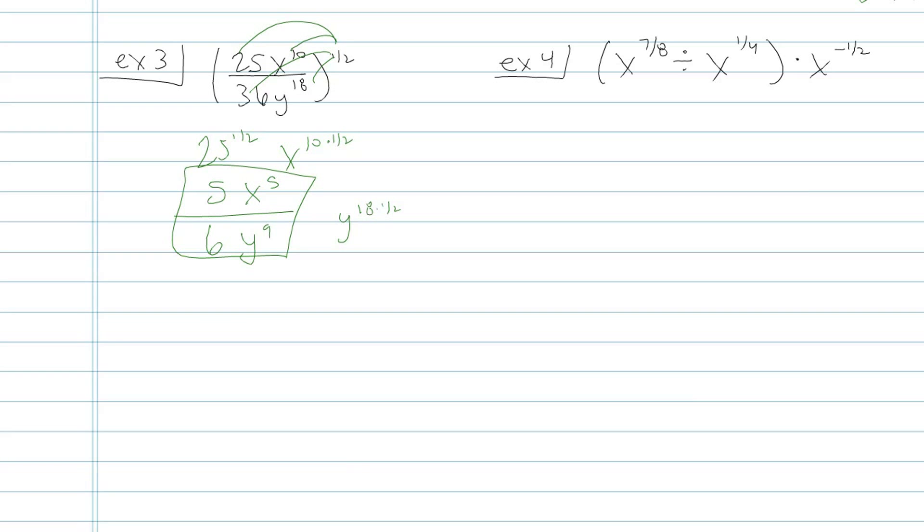Example four has a division sign and a multiplication sign. So if you're a visual learner, it might help you to rewrite it as a fraction, x to the seven-eighths divided by x to the one-fourth. We'll simplify that first, and whatever our answer is, we'll multiply it by x to the negative one-half. That's one way to do it. So in my division sign, I'm going to be subtracting exponents. Top exponent minus bottom exponent.